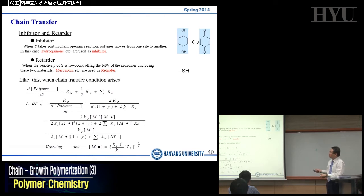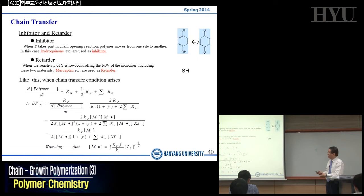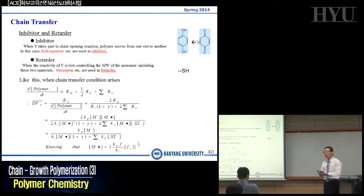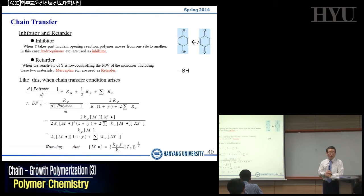If you have a mercaptan containing a thiol group — the SH group is called a thiol — the thiol has an active hydrogen just like an alcohol. This active hydrogen will lose its hydrogen radical, and the S dot will act as a retarder, scavenging the radical growing chain and delaying the polymerization reactions. So the inhibitor or retarder present in your monomeric systems will act as a chain transfer agent.